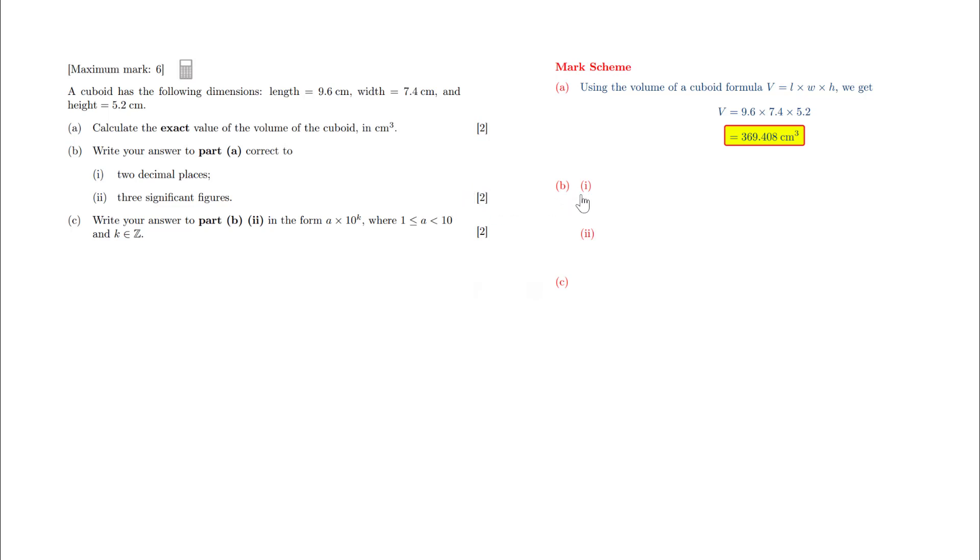Let's go ahead with the first part of part B. I want to round this number to two decimal places. The second decimal place is the zero here, 0.408. The eight is a large number, so therefore the zero will round up by one. So this becomes 369.41.